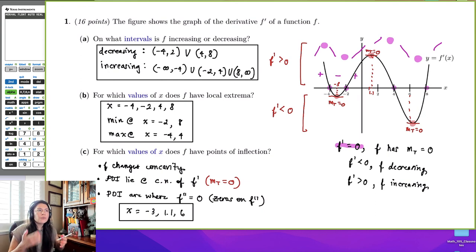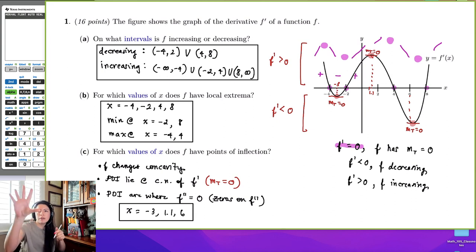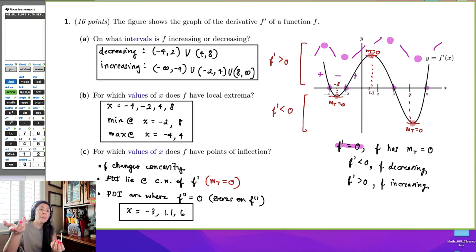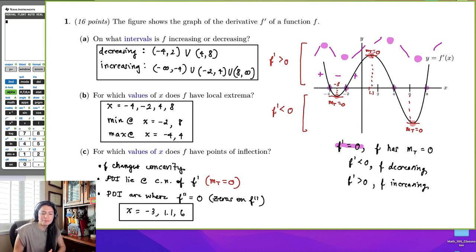In review: if you're given a graph of the derivative function, you can tell where the original function is increasing and decreasing by seeing where the derivative lies above and below the x-axis. Where it has local extrema is at the zeros of the derivative graph. And where it has points of inflection is where the derivative graph has horizontal tangent lines.